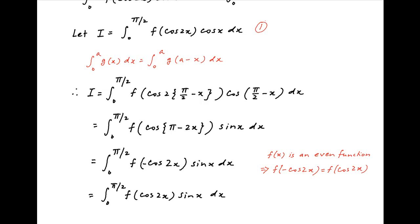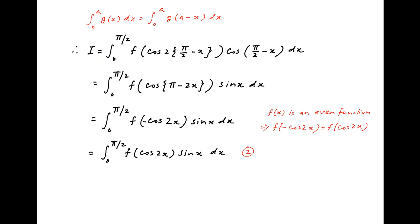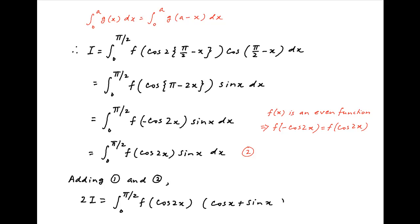Now we denote the original expression for I by (1) and the latest result for I by (2), and adding (1) and (2) we get 2I is equal to integral 0 to pi upon 2 of f(cos 2x)·(cos x plus sin x) dx.